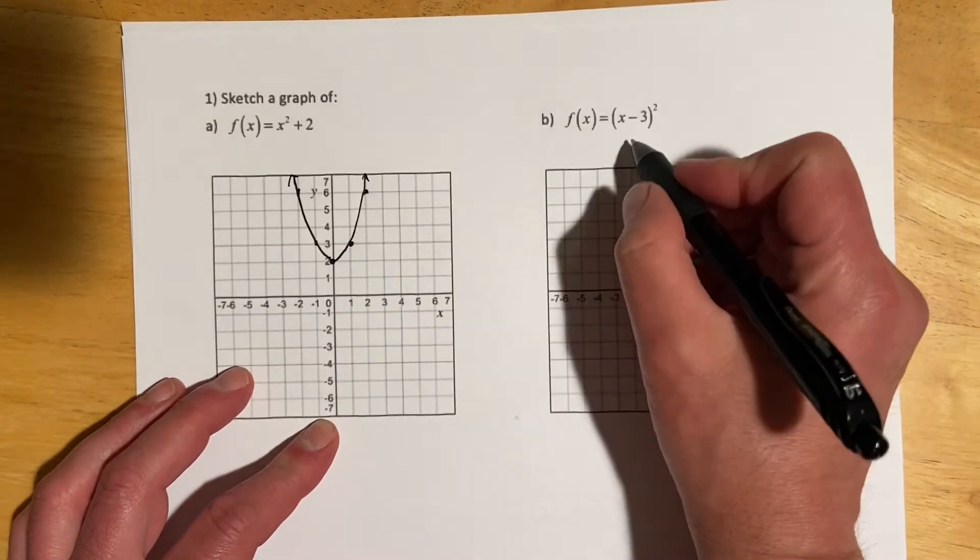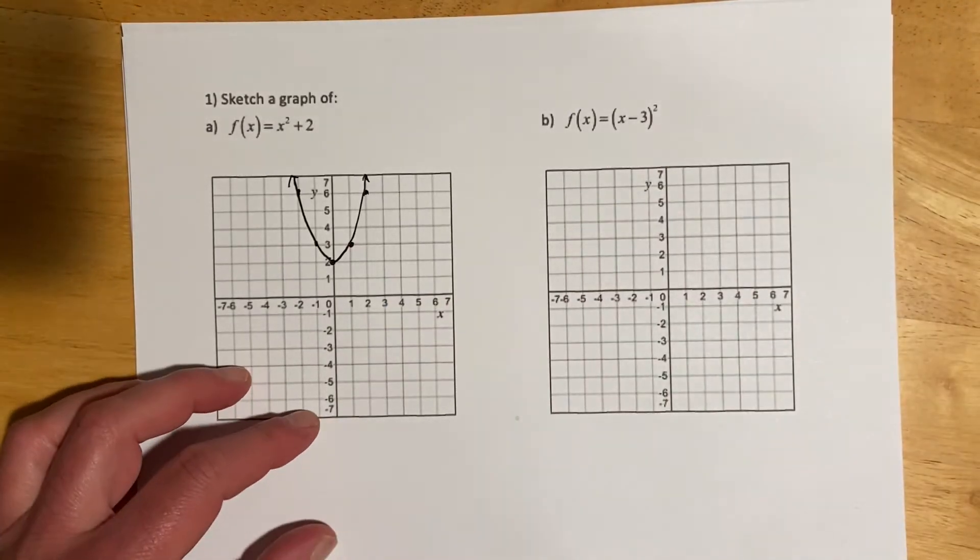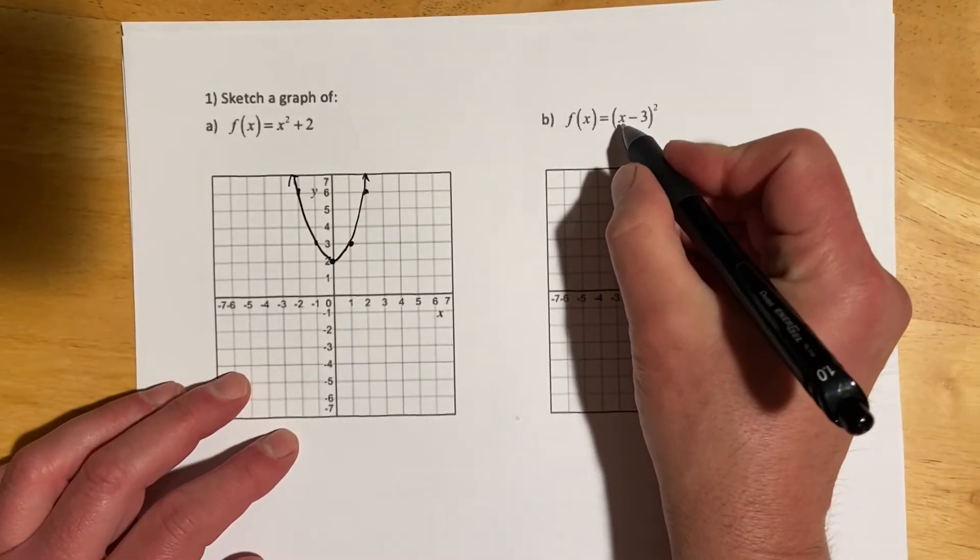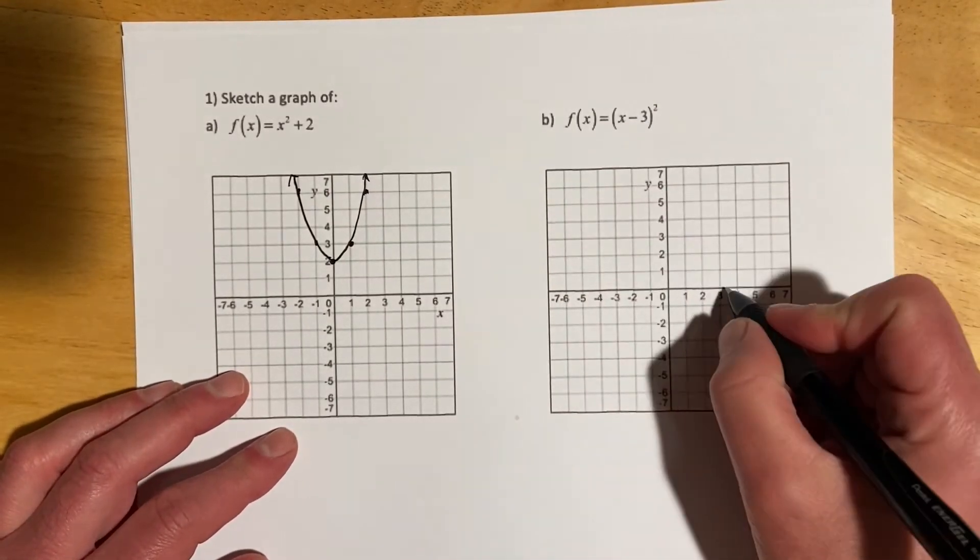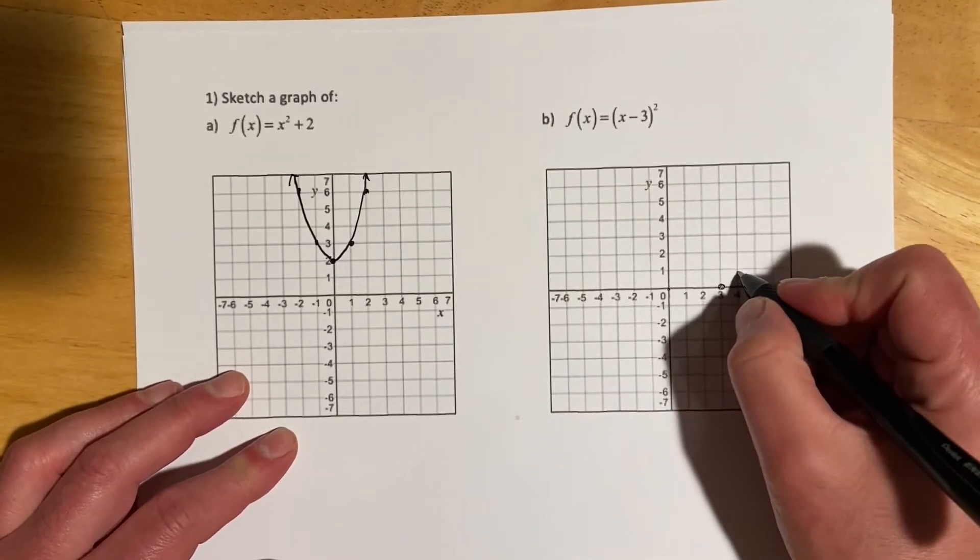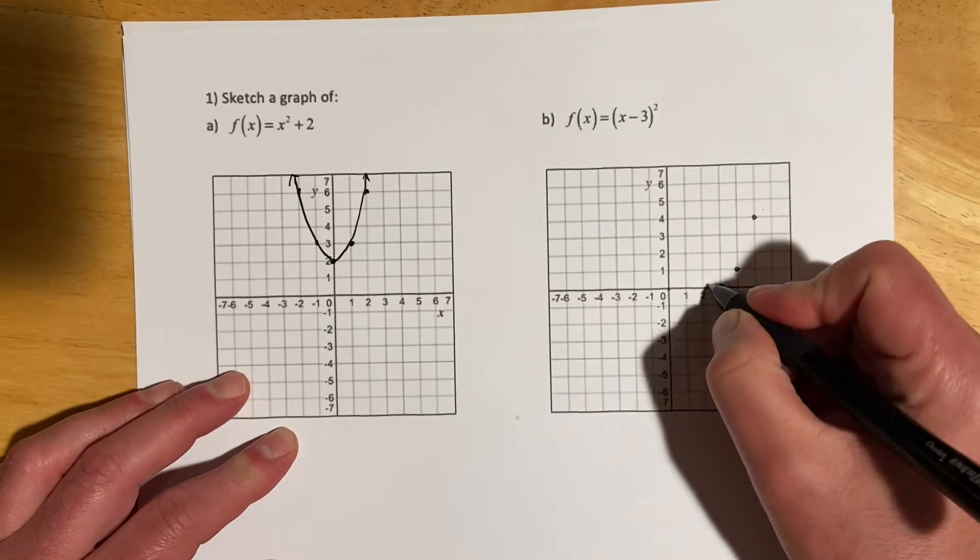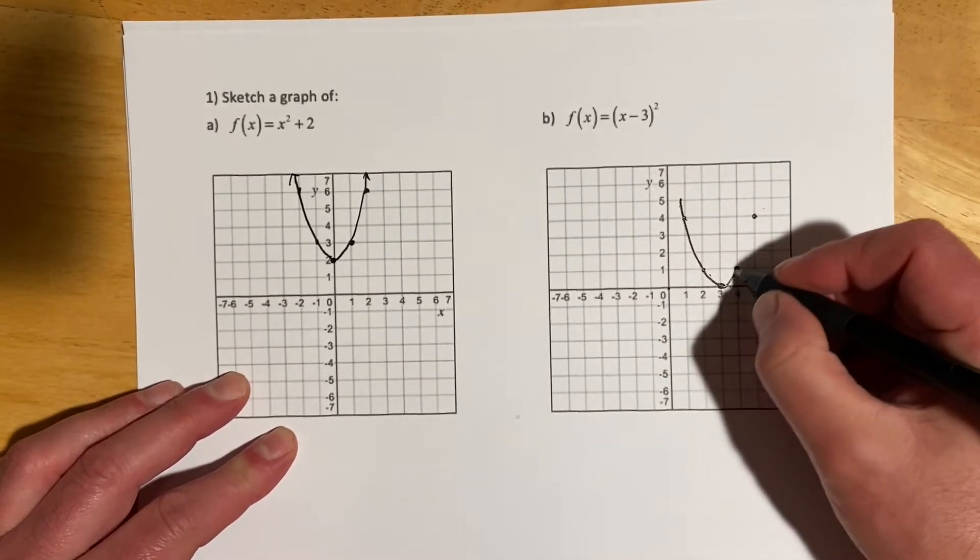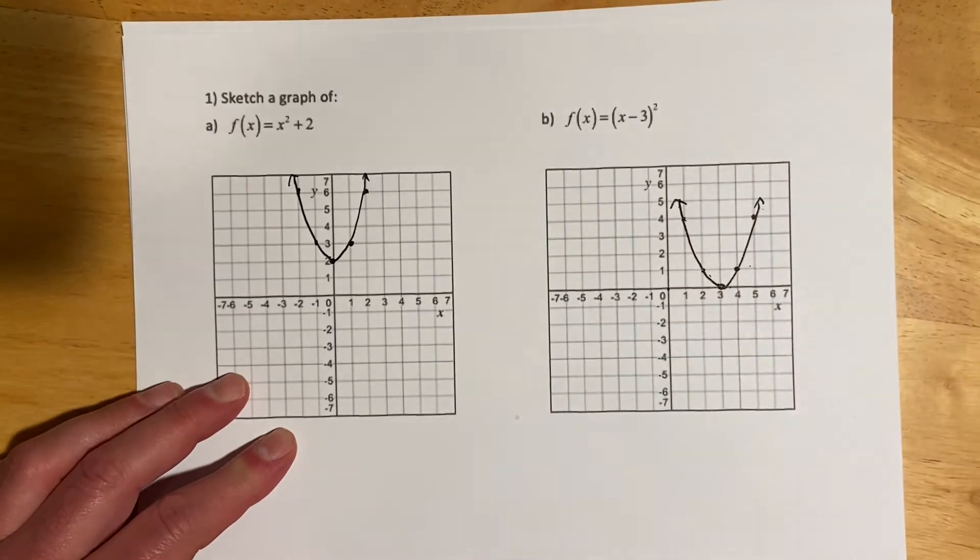So this one, same shape, but now that minus three, that's going to move it opposite the way we think. It's going to move it right three. That's because if I put three in there, three minus three would make zero. That's taking that zero point and moving it over here to three. And then we're just making that same shape. And then there's our transformed parabola.